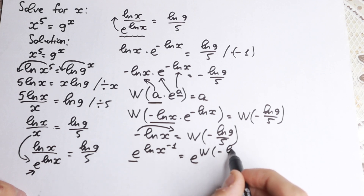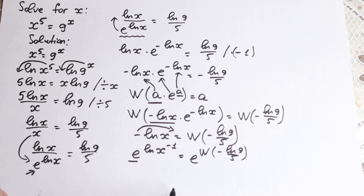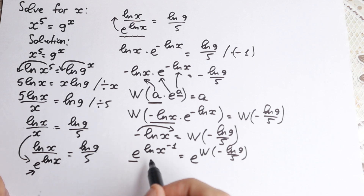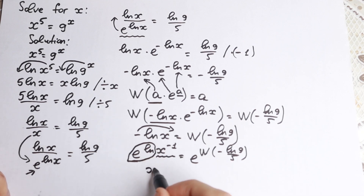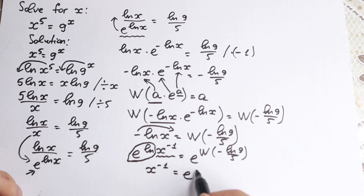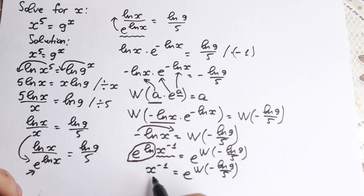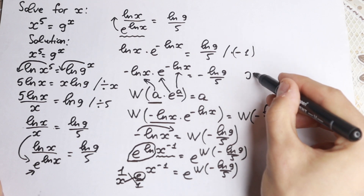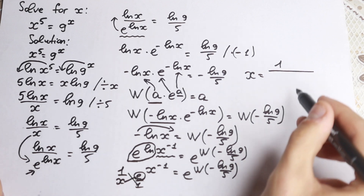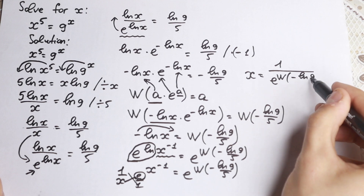We write e as the base on both sides. On the left, e to the power natural log x simplifies to x, leaving x to the power minus 1. So: x to the power minus 1 equals e to the power W(minus natural log 9 over 5). Since x to the minus 1 is 1 over x, using cross-multiplication we get our final answer: x equals 1 over e to the power W(minus natural log 9 over 5).